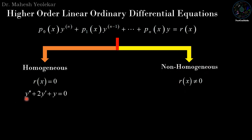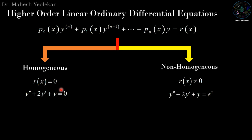For example, y'' + 2y' + y = 0 is homogeneous, while y'' + 2y' + y = e^x is non-homogeneous. Both represent the same system, but in the second case the external force is in the form of e^x.